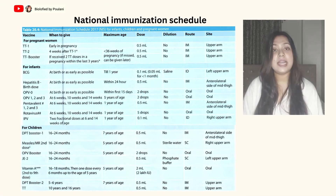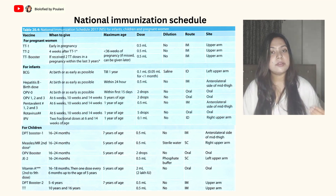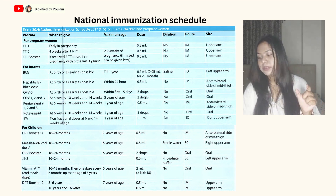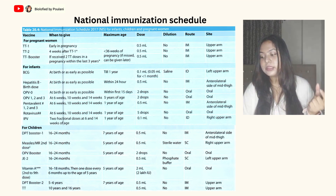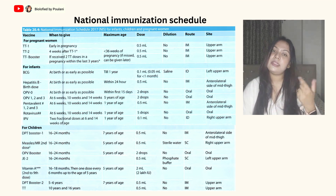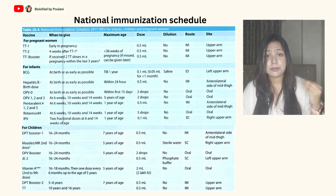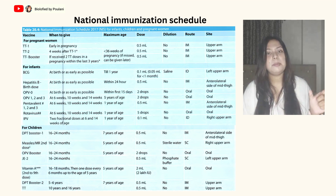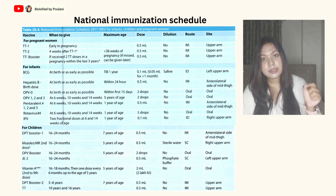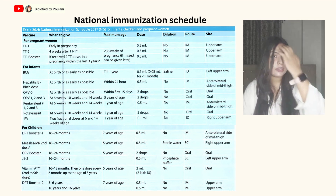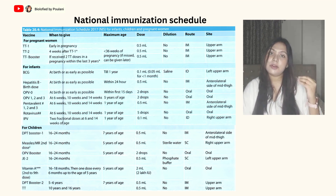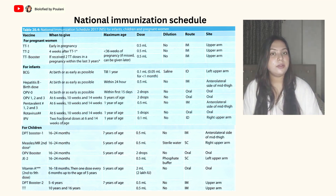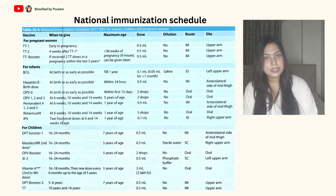In this slide you will know what the national immunization schedule is — which vaccines are given at which time, in which area of the body, the maximum age limit, the route of administration, dilution, and dosage in millilitres. This is just for your information; you don't need to memorize all of it, but you should at least know which vaccines are given to pregnant women, which are given to infants at early age, and which are for children. It is a self-explanatory slide.